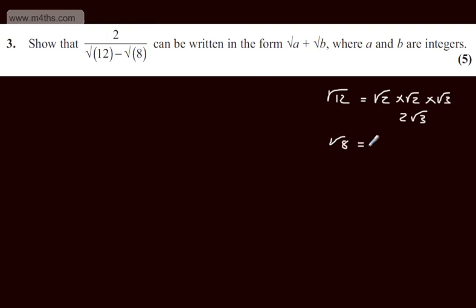If we consider the root of 8, we can write this as the root of 2 multiplied by the root of 2 multiplied by the root of 2. Root 2 times by root 2 is 2, so we end up with 2 root 2.